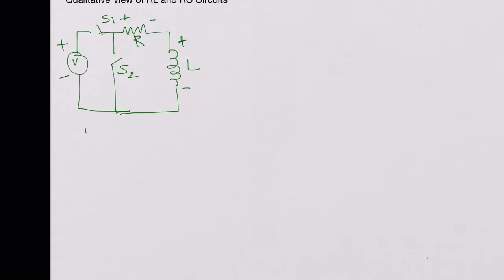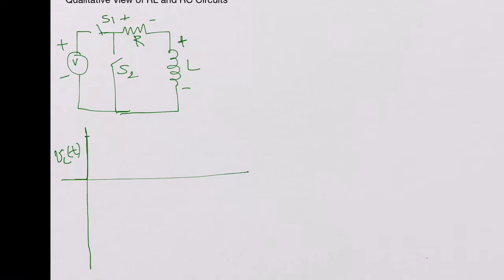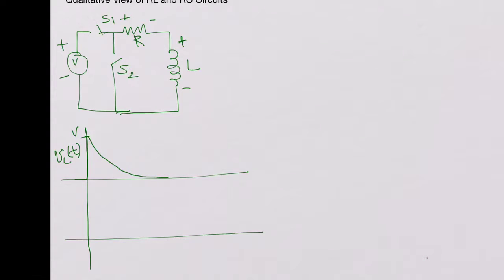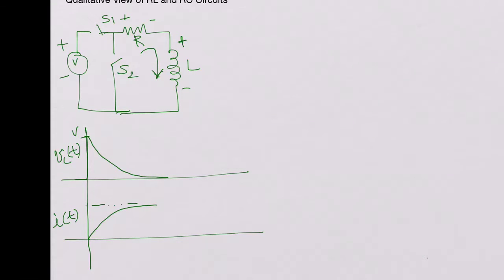If we plot the voltage VL(t), it initially starts at V and then falls towards zero as the inductor becomes a short. If we look at the current I(t) flowing in the circuit, it initially starts at zero and increases to a value of V over R.